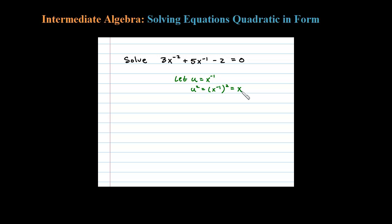or x to the negative 2 power, and that's what we have here. So when I make the substitution, I'd have 3u squared plus 5u minus 2 equals 0. So it looks like a regular old quadratic.